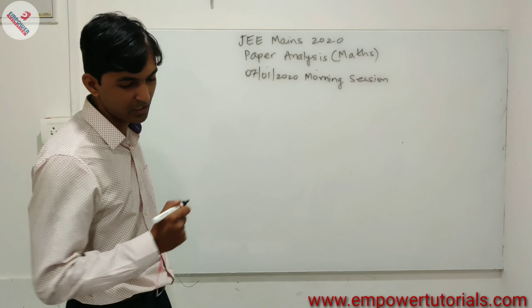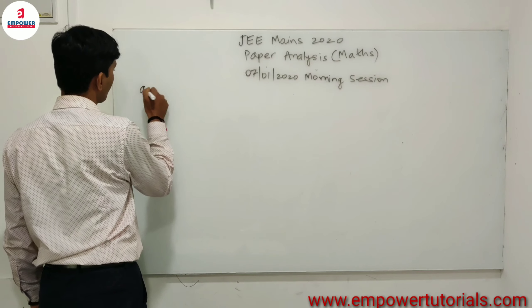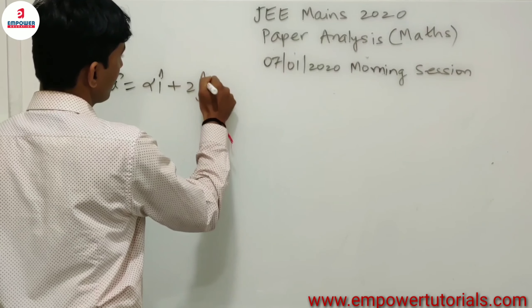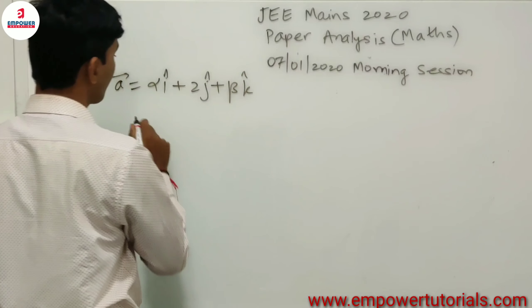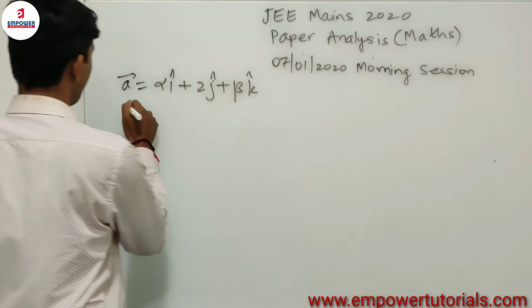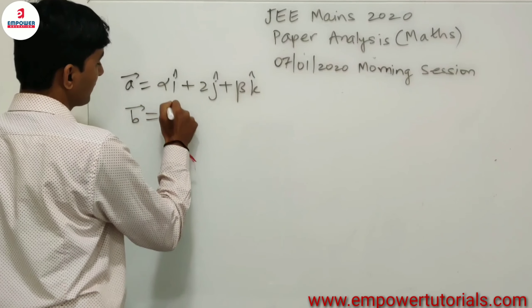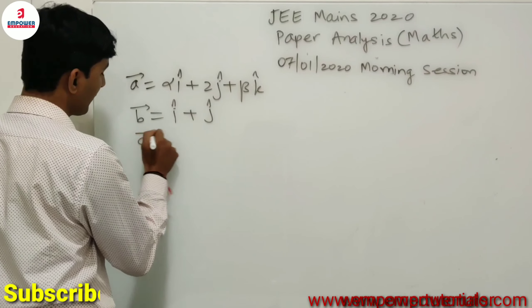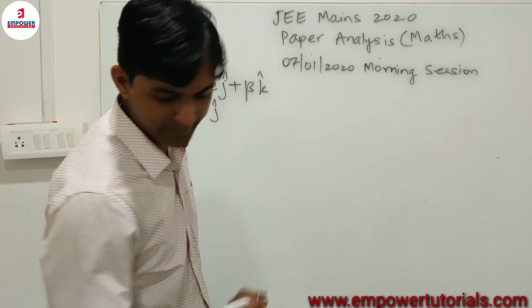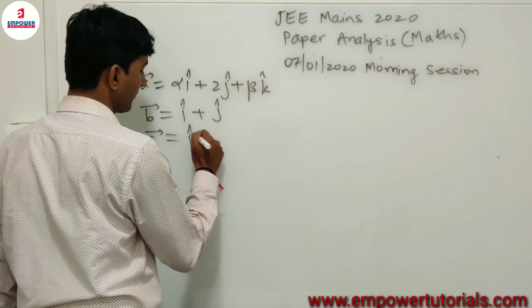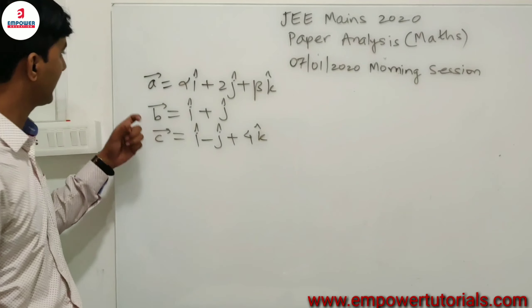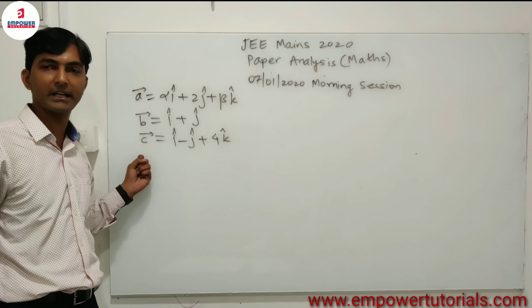Vector **a** is given as α·î + 2ĵ + β·k̂, where α and β are real values. Vector **b** is given as î + ĵ, and vector **c** is given as î − ĵ + 4k̂. It is stated that **a** is the angle bisector of **b** and **c**.